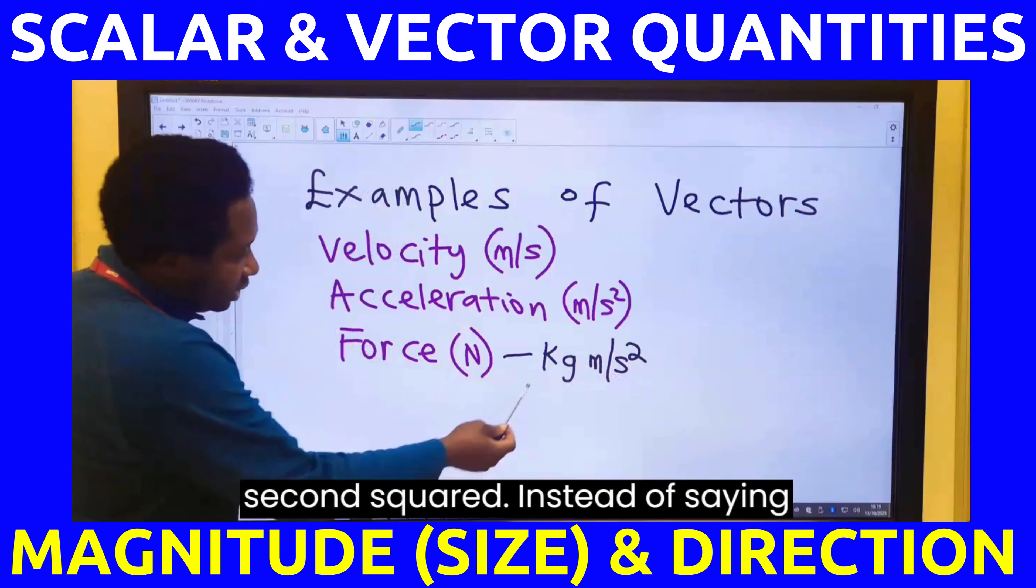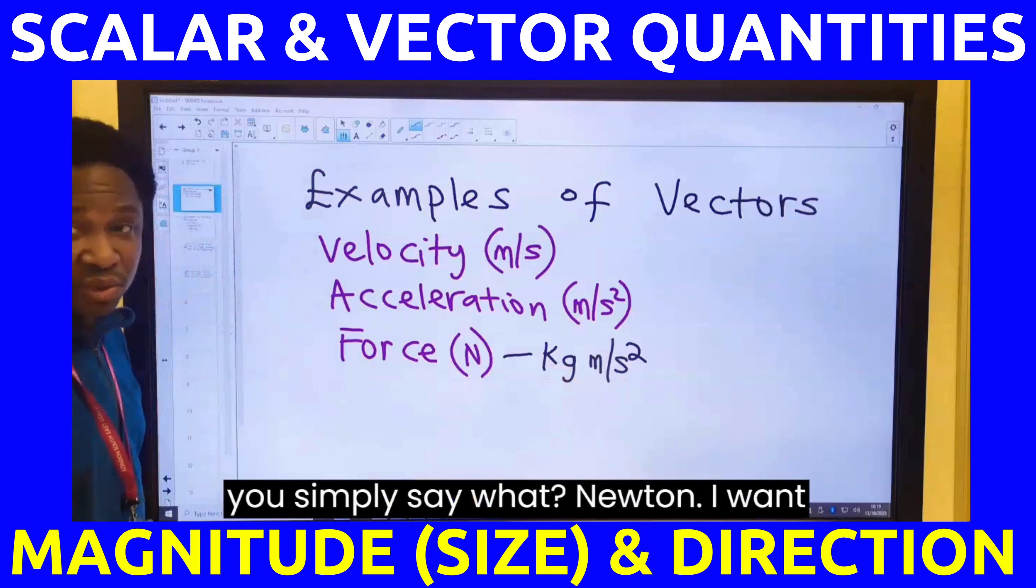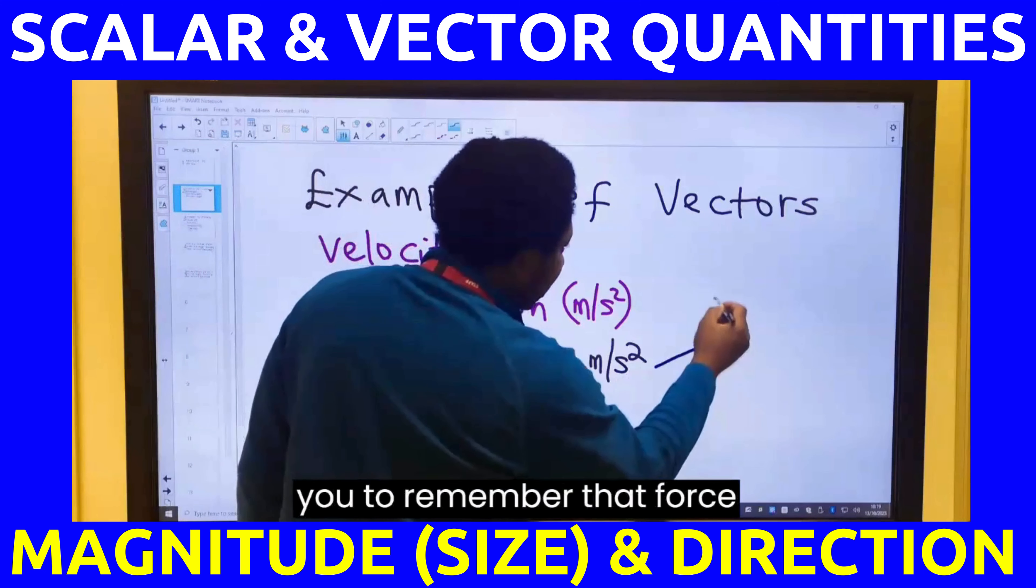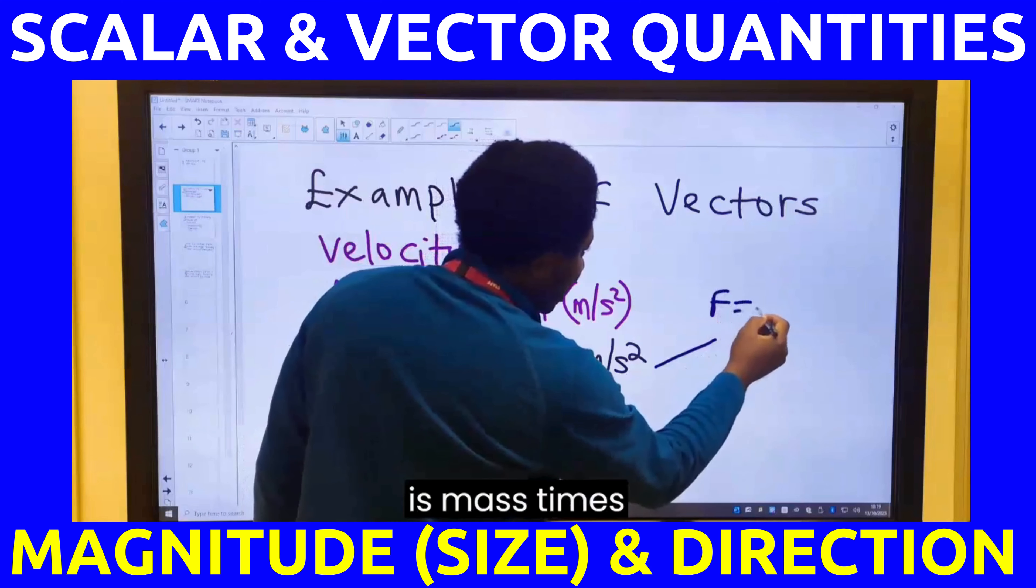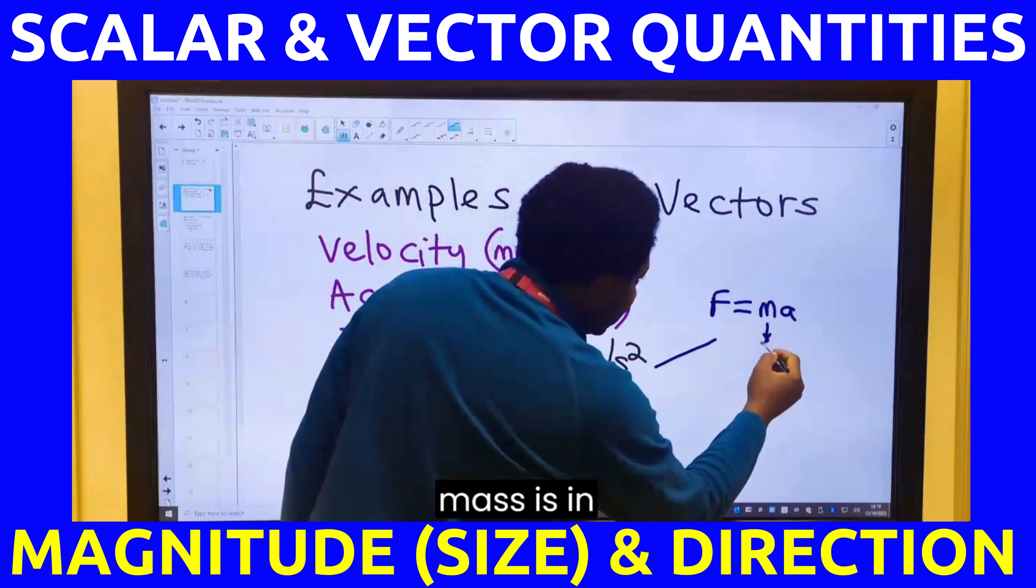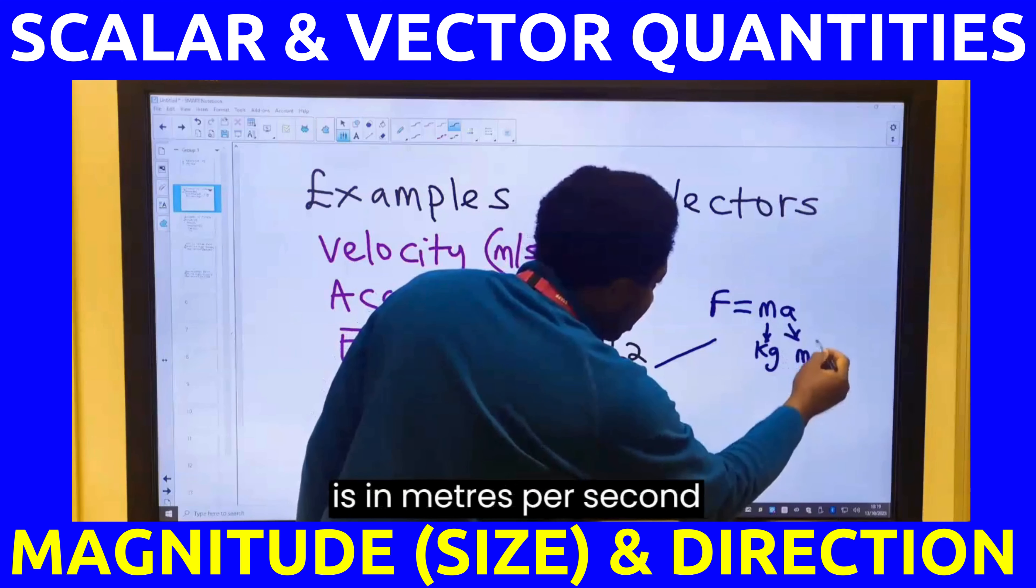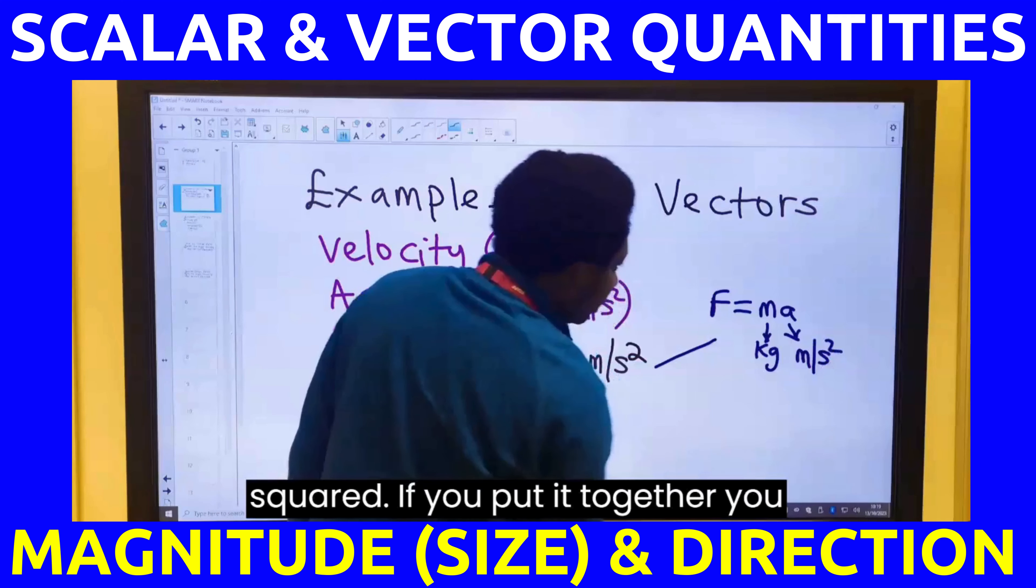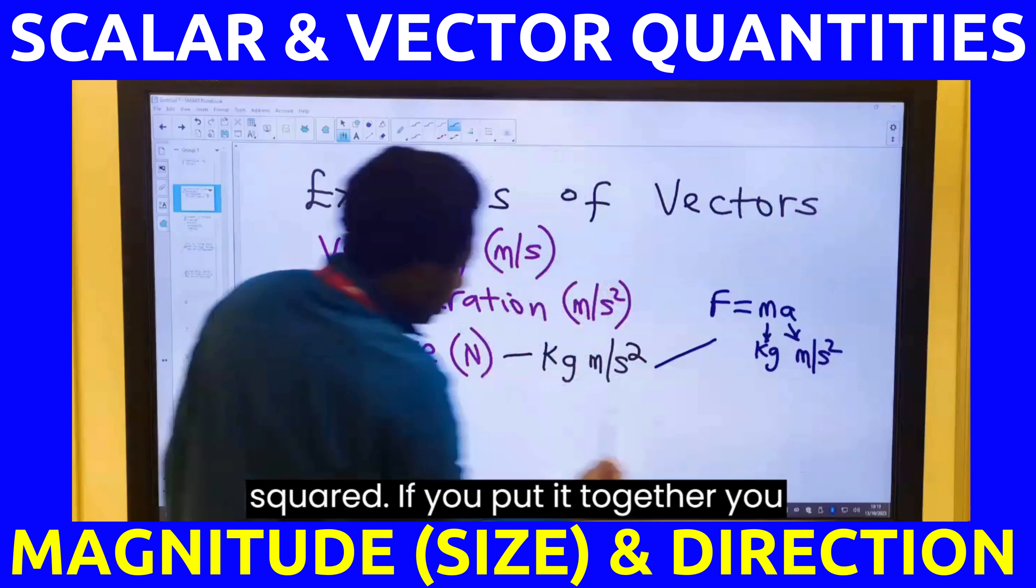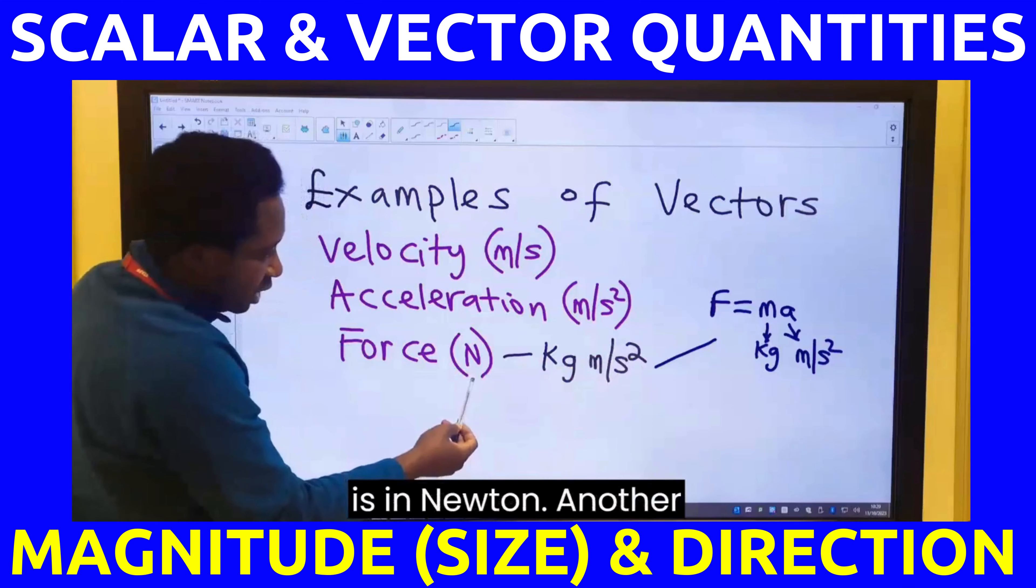Instead of saying kilogram meters per second squared, you simply say newton. I want you to remember that force is mass times acceleration. This mass is in kilogram, and the acceleration is in meters per second squared. If you put it together, you get this. Force is in newton.